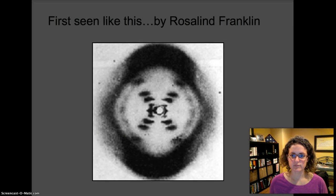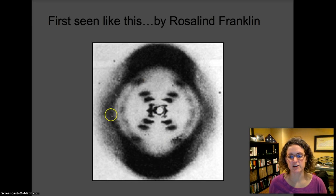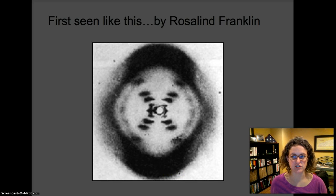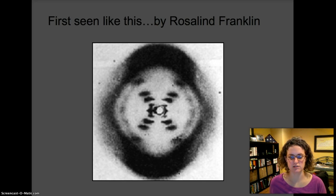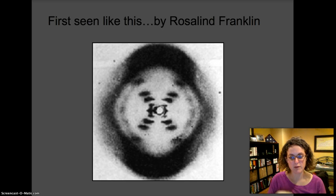If you take that twisted ladder and look down the middle of it, you would see all the nitrogen bases in the center — and that's what Rosalind Franklin saw in her pictures. She was one of many scientists working on the molecule that contained genetic instructions. People were trying to figure out how DNA was made, and Rosalind was creating images using X-ray technology that was advanced at the time. She was able to see that the bases were in the middle and that the structure was a helix or spiral.